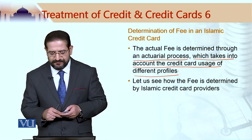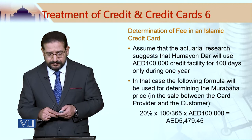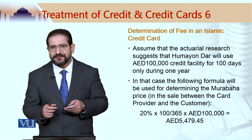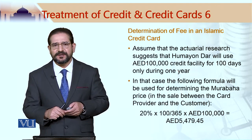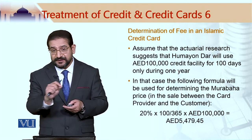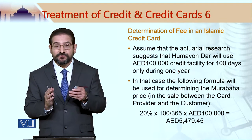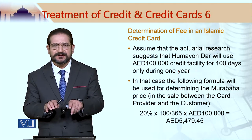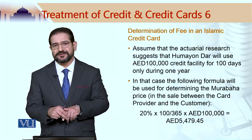Let us see how the fee could be determined in an Islamic credit card framework. I refer to the actuarial process — what does this mean? Among other things, this means that if I am applying for a credit card facility, the credit card company would pass on my information. They ask me a lot of things about my identity, about my income, about my expenses and so on. So I have got my profile stored somewhere. The credit card provider, once my application is submitted, would give my profile to a specialist company and they would come up with their observations on me.